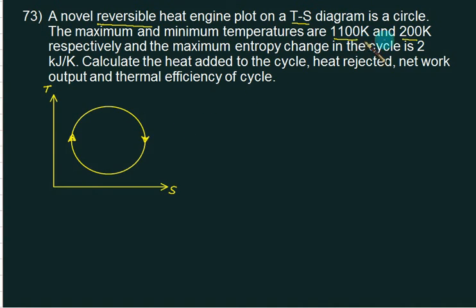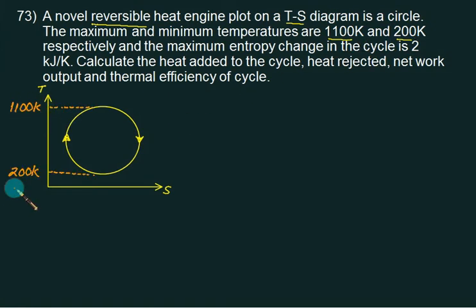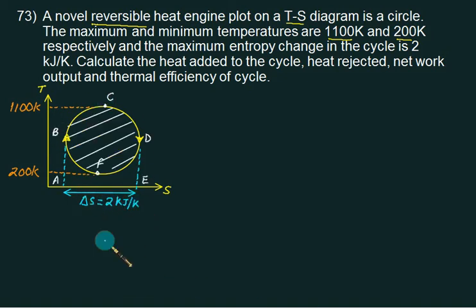The radius is given or the maximum and minimum are given. Maximum temperature will attend at this point 1100 kelvin, 200 kelvin. What is the entropy change? 2 kilojoules per kelvin. So let's mark these points on the graph A, B, C, D, E, F. So what is the area of circle? Area of circle is basically W net.